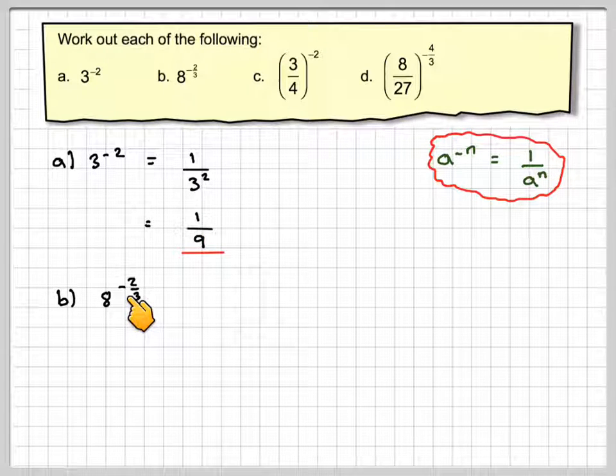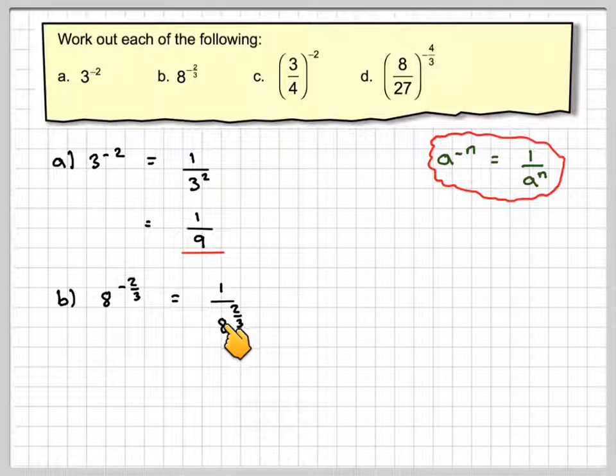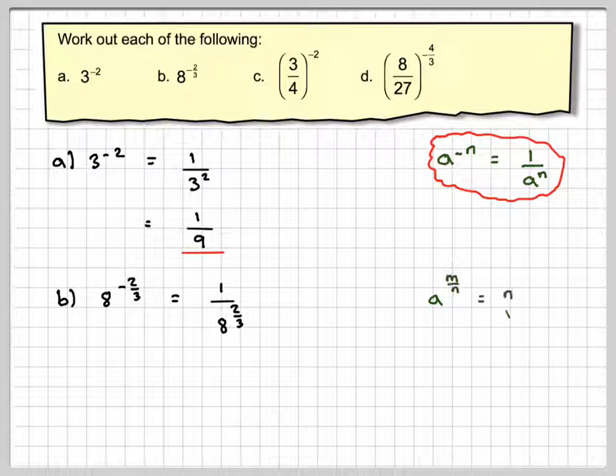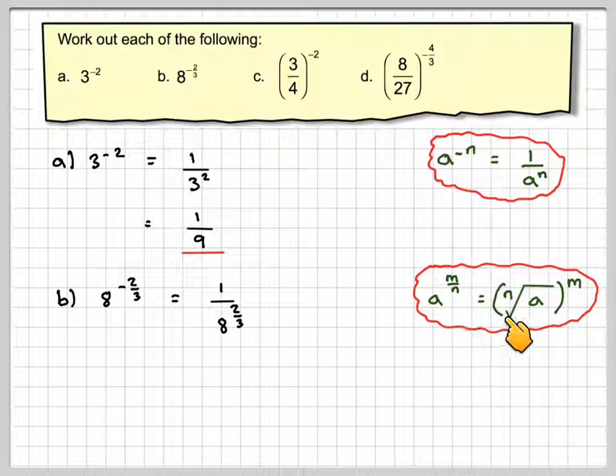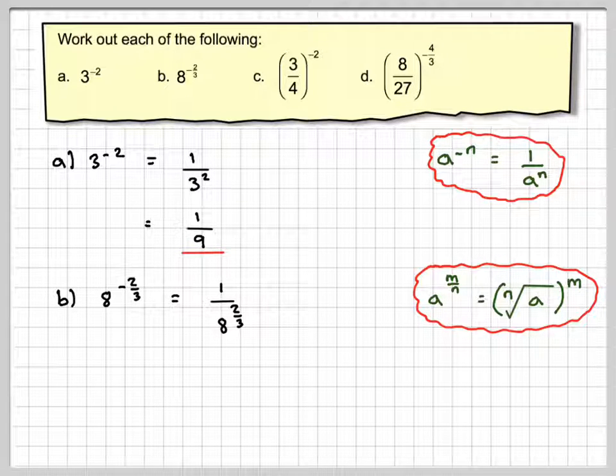Part b, 8 to the minus 2 over 3, this becomes 1 over 8 to the 2 over 3 using this rule up here. Now a to the m over n means take the nth root of a and then raise it to the power of m.